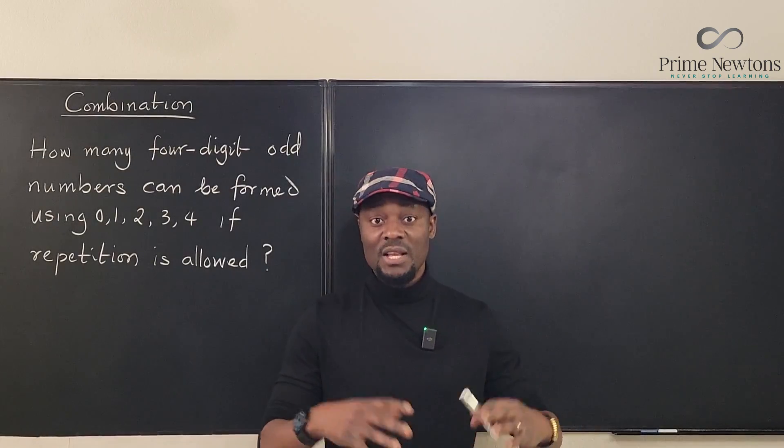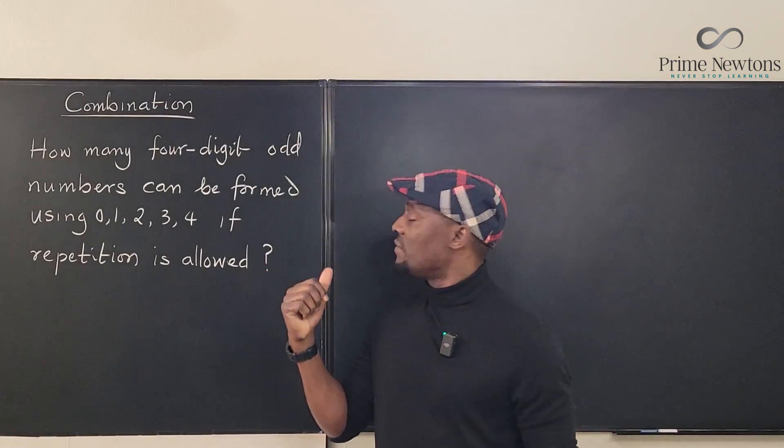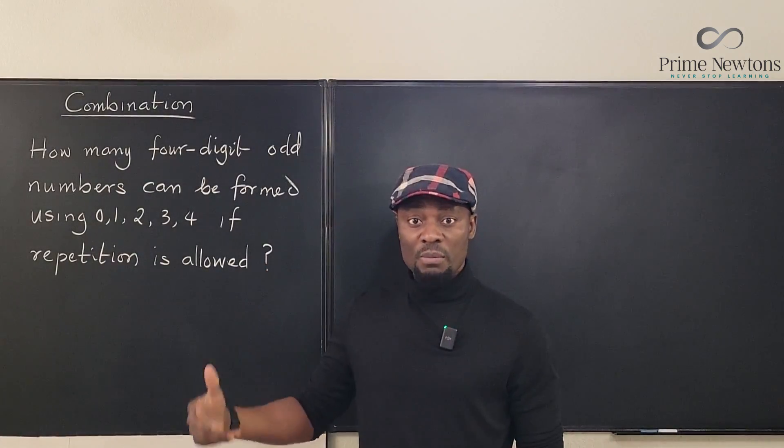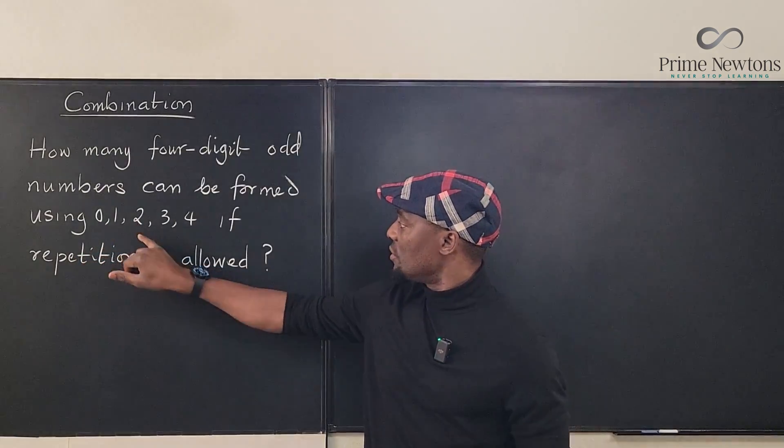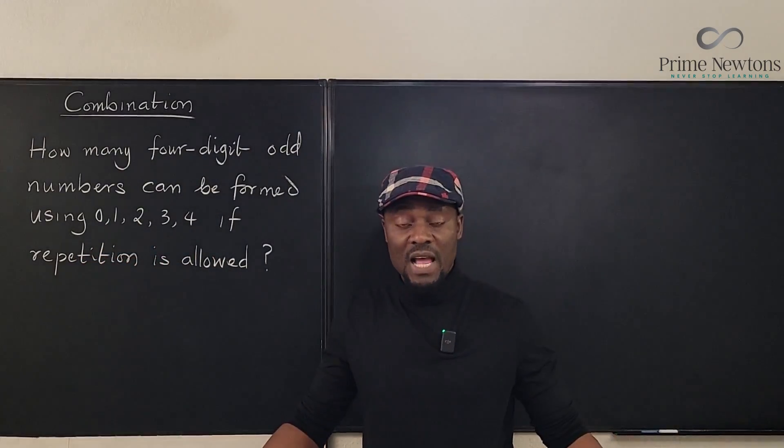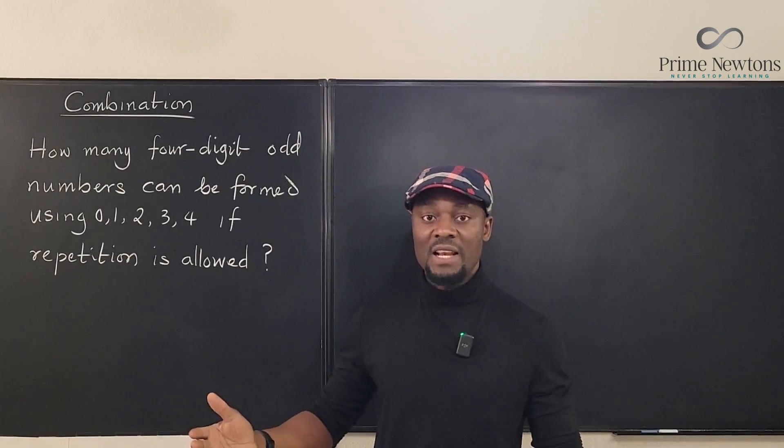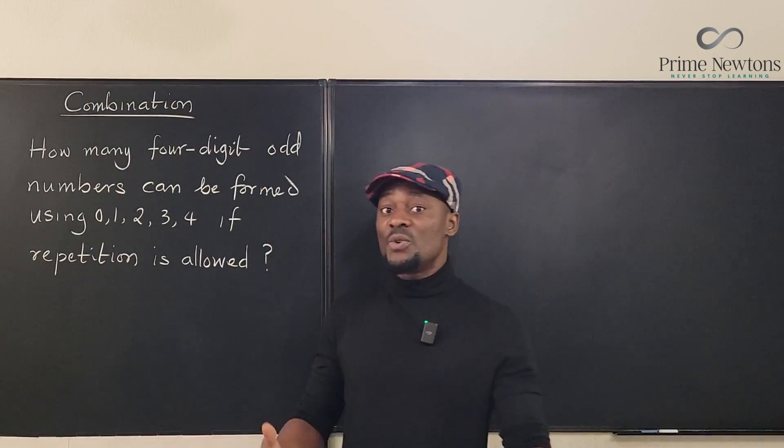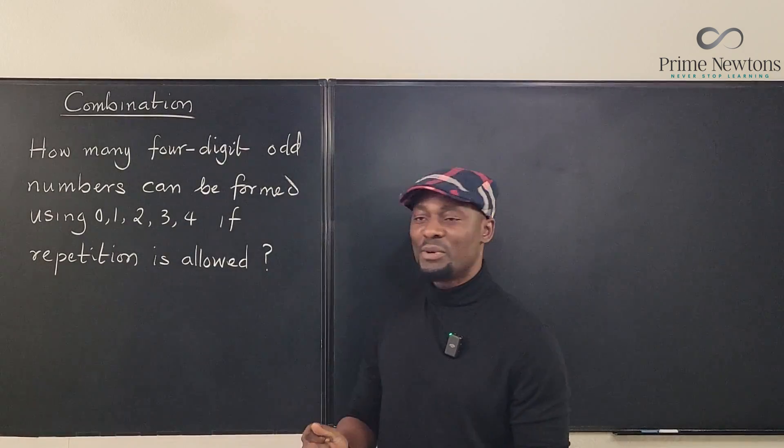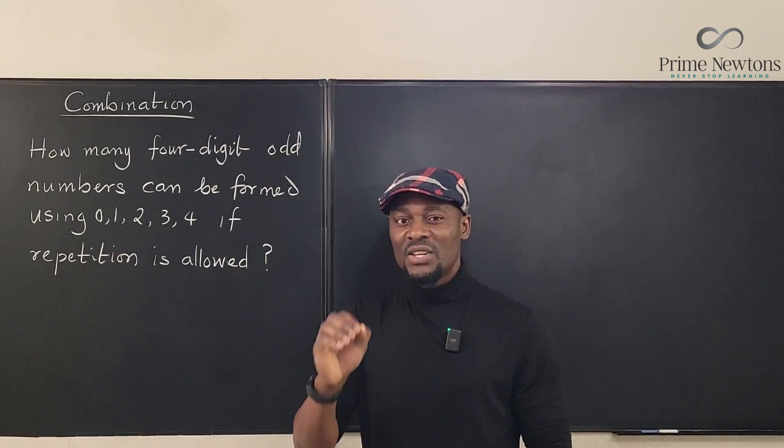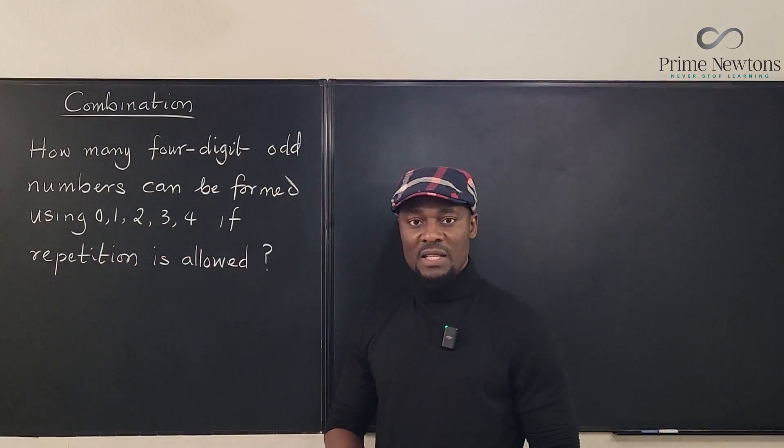And here it's saying: how many four-digit odd numbers can be formed using 0, 1, 2, 3, 4 if repetition is allowed? That is, you can have 1, 1, 1, 1 or 2, 2, 2, 2 like that. So it's not like if you use the number you can't use it again. You can always reuse a number as long as it's possible. So how many possible four-digit odd numbers can you form if these are the only options that you have as digits?